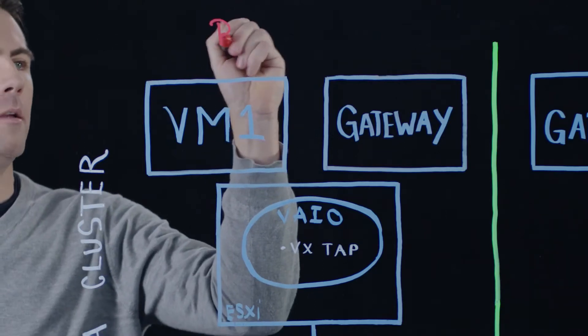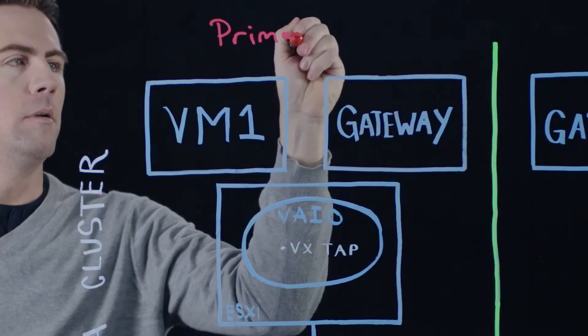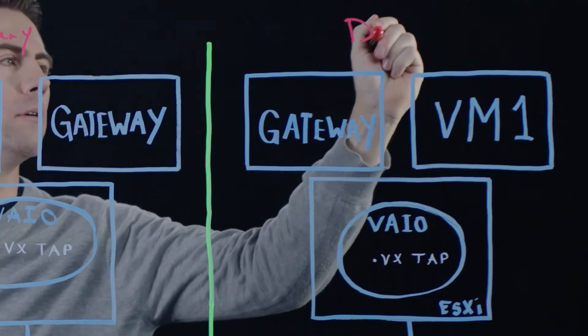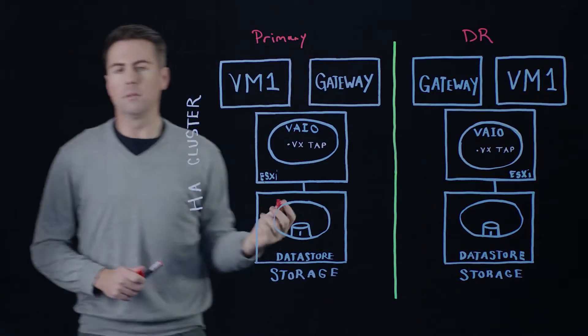So here we have our primary data center. And over here we have our DR data center. Fairly typical configuration.